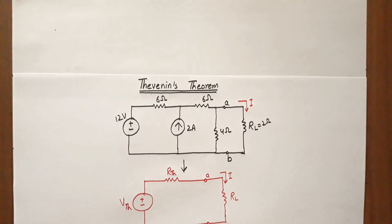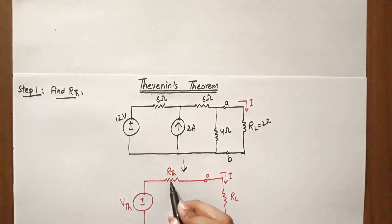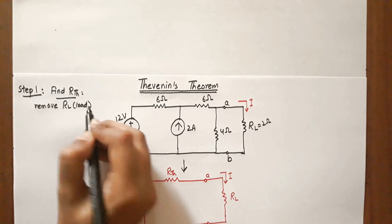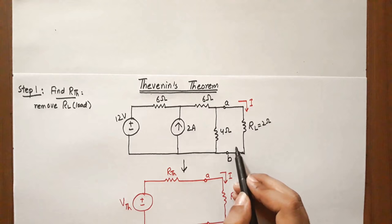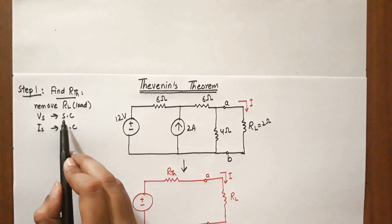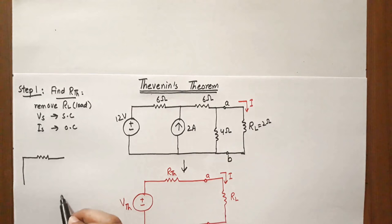We will go through Step 1, which is to find R_thevenin. The conditions are: first, remove the load R_L so that terminals A and B are open circuit. Then, all independent sources are set to zero — voltage sources become short circuits and current sources become open circuits, so their contribution is zero.